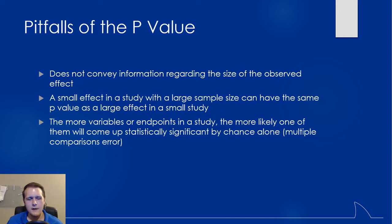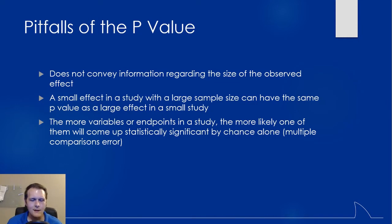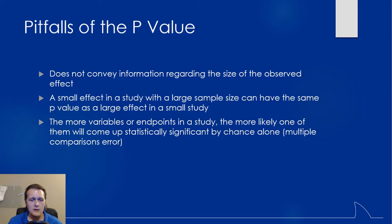Looking at the pitfalls, the p-value does not actually tell you anything about the actual effect size. Very often someone can say this is a statistically significant result, but it may be a 1 millimeter difference in blood pressure — clinically it doesn't really matter. You can find really small statistically significant differences if you have a large enough sample size. It's also based on the number of endpoints you're looking at — because of the multiple comparisons problem, if you keep looking for something you're eventually going to find something just by chance alone.